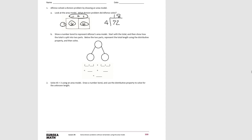Here we're showing a number bond to represent Alfonso's area model. We started with 72 as the total, then showed how it's split into two parts: 40 and 32. We're dividing by 4, so using the distributive property, we did 40 divided by 4 and then 32 divided by 4 — distributing the division by 4 over both parts of 72. 40 divided by 4 is 10, and 32 divided by 4 is 8. When we add them together, we get 18, just like we did with the area model.